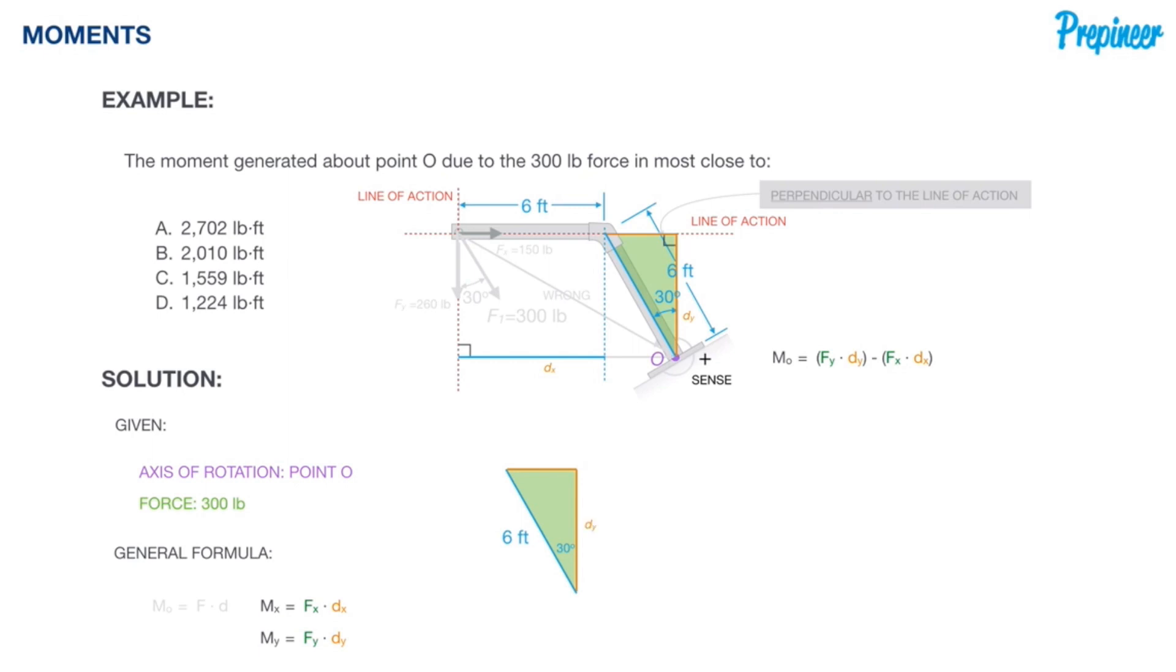And of course, our vertical component will be our dy length. Our horizontal component will be the second portion of our dx length, which I denote here as dx2. With our triangle now fully defined with the geometric data we need, we can use our trig identities to quantify dy and dx2.